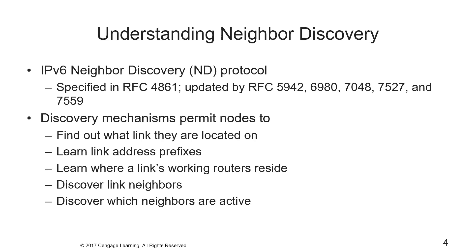The IPv6 neighbor discovery protocol is specified in RFC 4861, with updates in RFCs 5942, 6980, 7048, 7527, and 7559. They define a variety of discovery mechanisms that permit nodes to find out what link they're located on, learn address prefixes, learn where a link's working routers reside, discover link neighbors, and discover where neighbors are active.